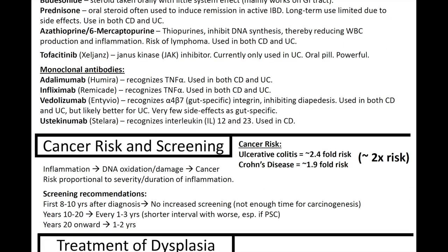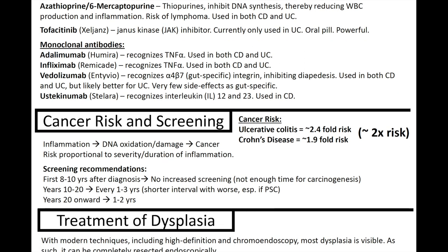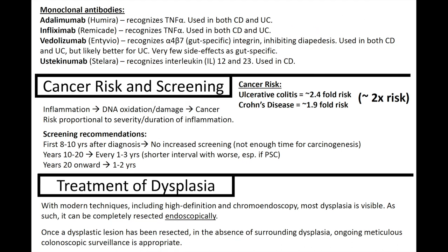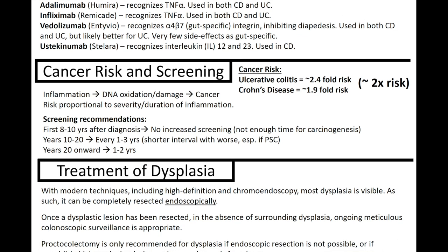There is approximately a two-times greater risk of cancer in individuals with ulcerative colitis and Crohn's disease, which is why starting with a stronger, more effective treatment is better. Staying on top of it means less inflammation, which leads to less DNA oxidation and damage, and a lower likelihood of cancer. The risk is proportional to the severity and duration of inflammation — using monoclonal antibody treatments earlier leads to less severe disease and lower likelihood of progression to cancer.